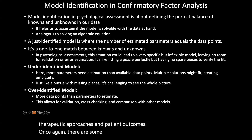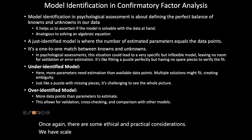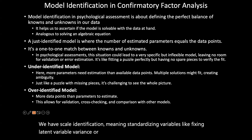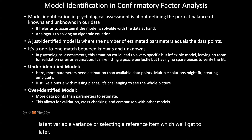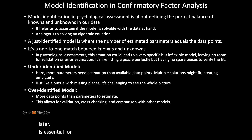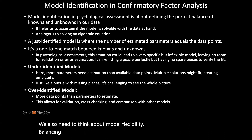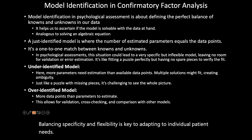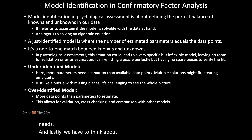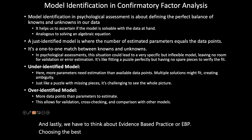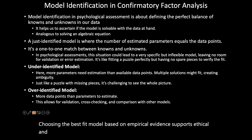There are some ethical and practical considerations. We have scale identification — standardizing variables like fixing latent variable variances or selecting a reference item is essential for meaningful interpretation. We also need to think about model flexibility: balancing specificity and flexibility is key to adapting to individual patient needs. Lastly, we have to think about evidence-based practice (EBP) — choosing the best fit model based on empirical evidence supports ethical and effective therapeutic interventions.